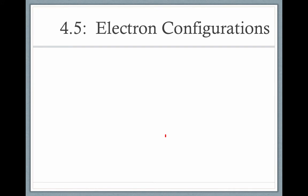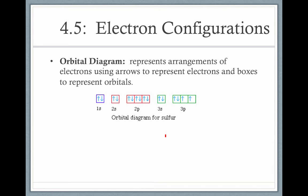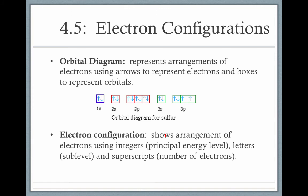There are two ways to represent the arrangement of electrons in an atom. The first is with an orbital diagram. An orbital diagram uses arrows to represent electrons and boxes to represent orbitals. You can see three boxes in a row representing the three p orbitals in the 3p sublevel. We can also use an electron configuration, which uses letters, numbers, and superscripts.